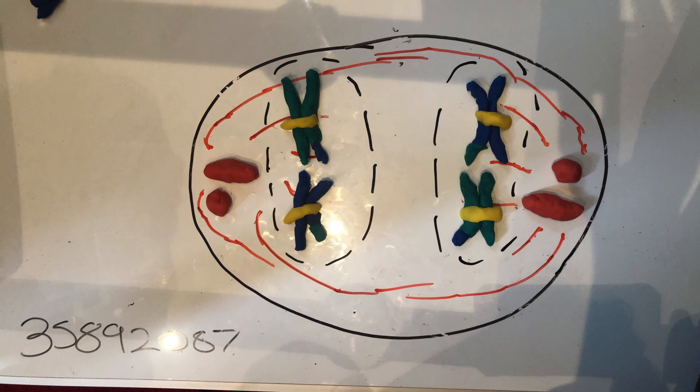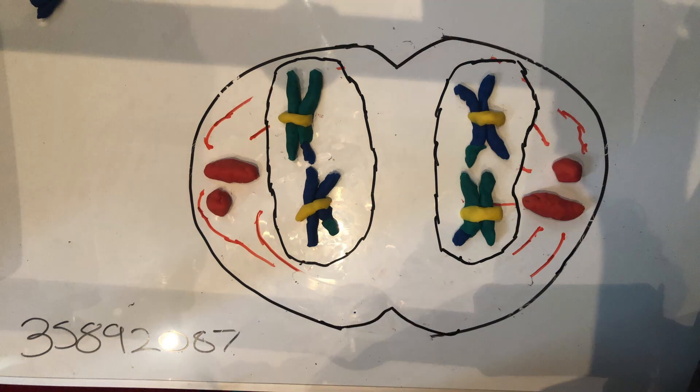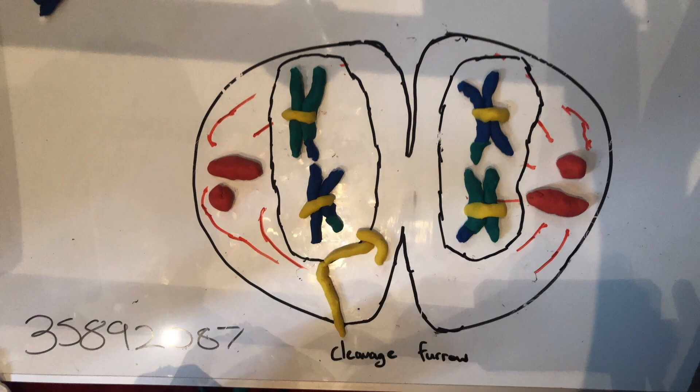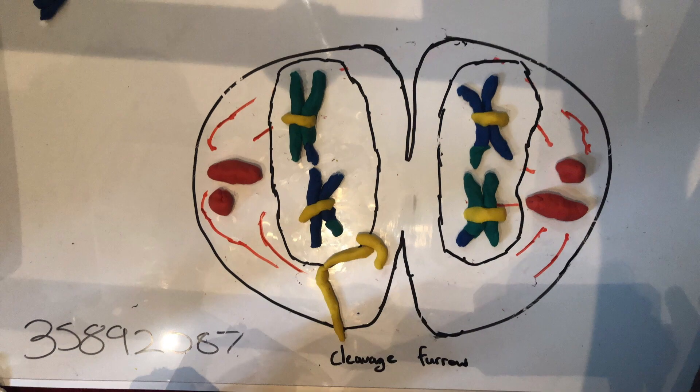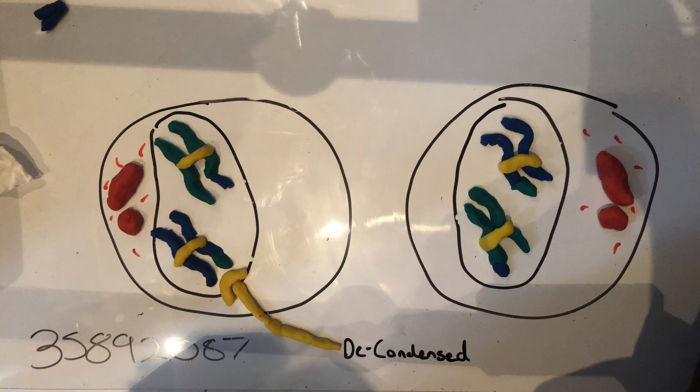Once anaphase has been completed, telophase 1 begins. Meiosis 1 ends with telophase 1, where the chromosomes decondense and the nuclear membrane begins to form. During telophase 1, cytokinesis 1 commences and begins to separate the cytoplasmic material. Once the cytoplasmic material has been mainly separated, the cleavage furrow separates the remaining cytoplasmic material and two haploid daughter cells are formed. This marks the end of meiosis 1.